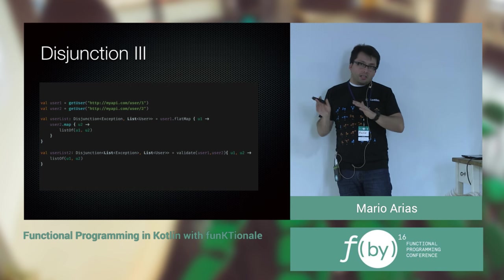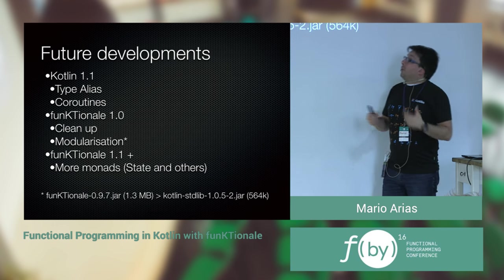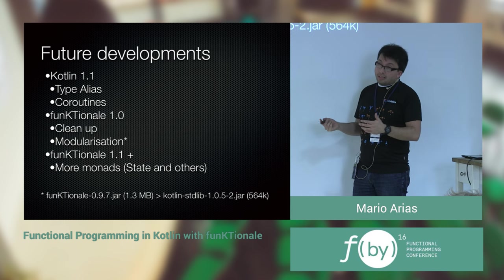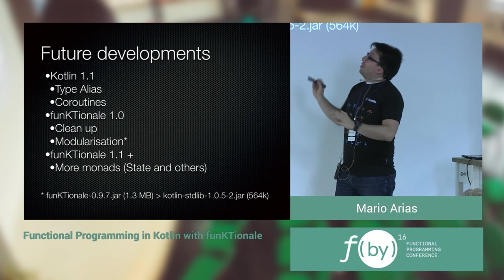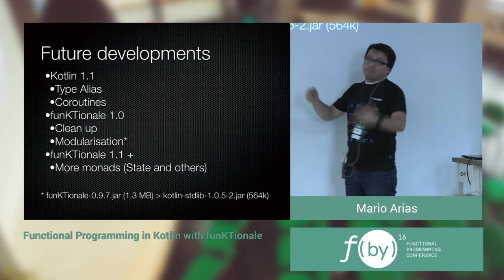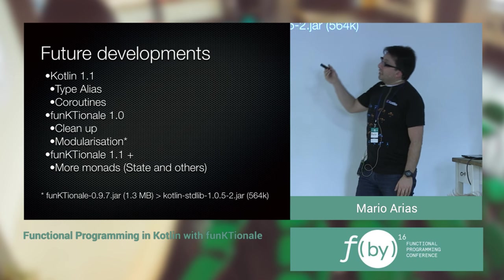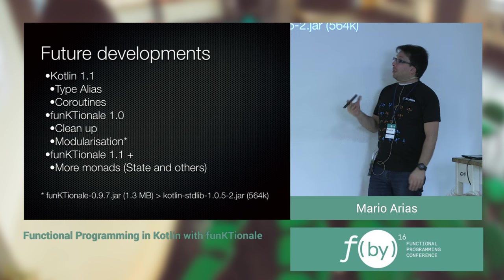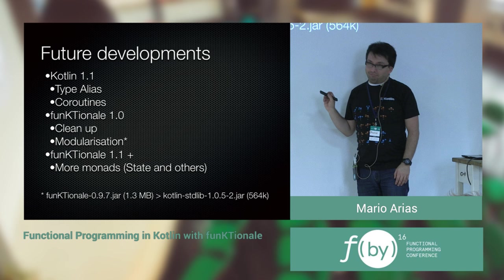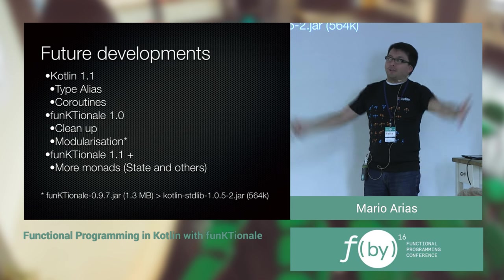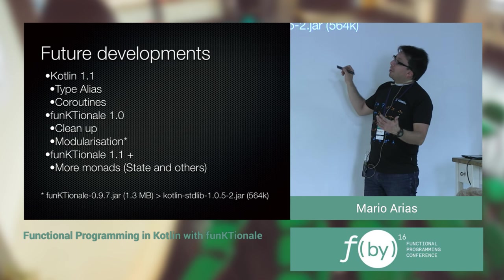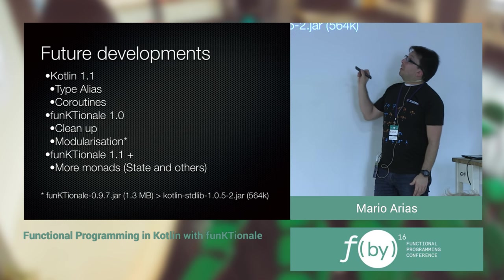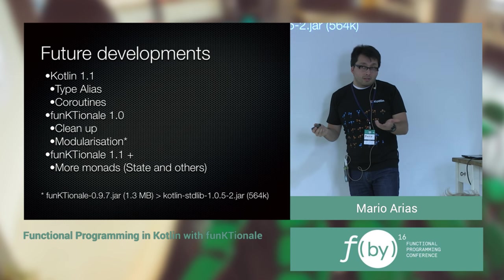For future Kotlin developments: we'll have type aliases, which will be really useful for my library. And coroutines, which are mind-blowing — so amazing I don't fully understand them yet, but maybe next year we'll do a talk on that. For the next version of Funktionale, I'll clean up and modularize, because Funktionale is actually bigger than the Kotlin standard library due to all the function overloads. In version 1.1 I'll add more monads — I'm working on a State monad — and some could leverage coroutines for crazy stuff.